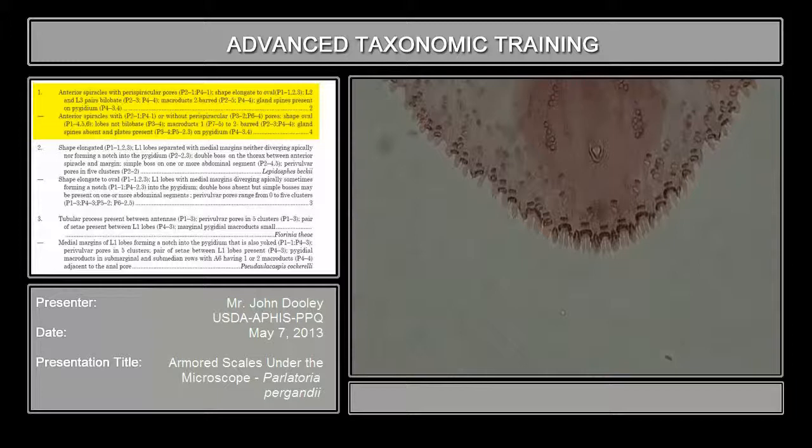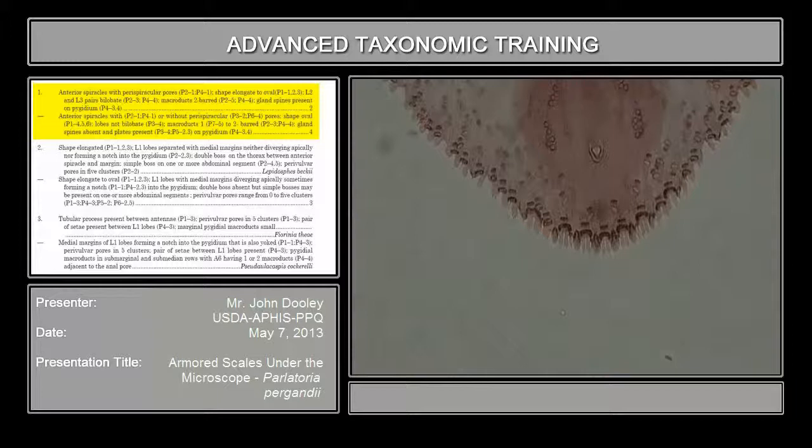So if you follow that key, you go automatically to number four. Two barred marginal and submarginal macroducts present. If you look at plate five, figure two and three. And that's what these are. I'll try to get a higher power just to see if it does any better. Two barred macroducts. You can see all the macroducts with the big orifice there.